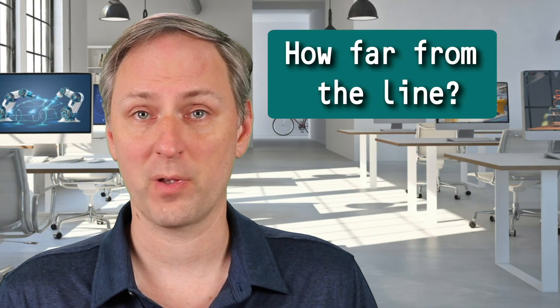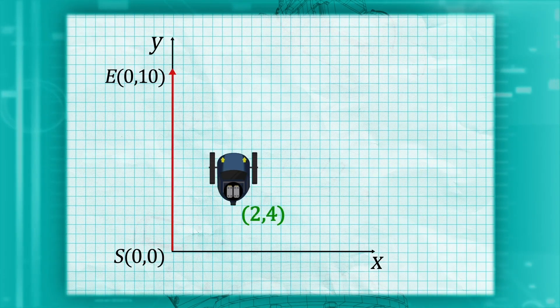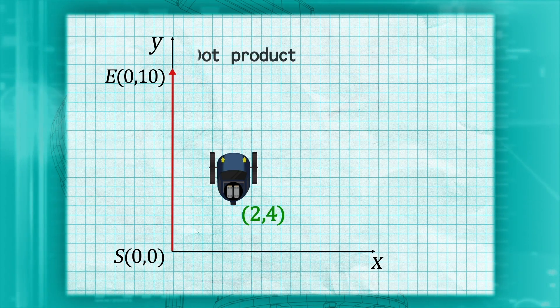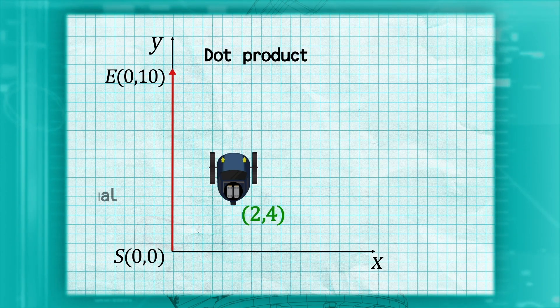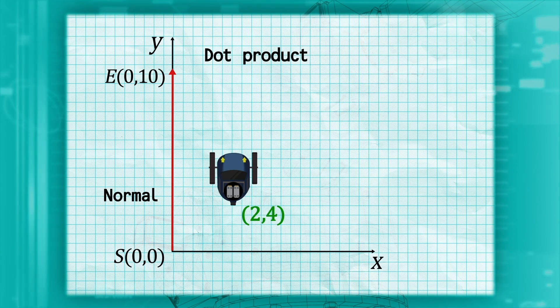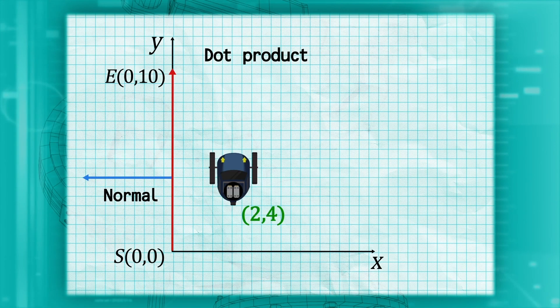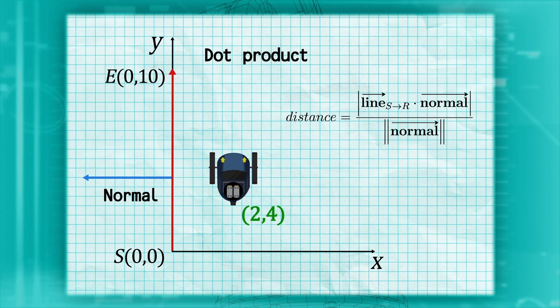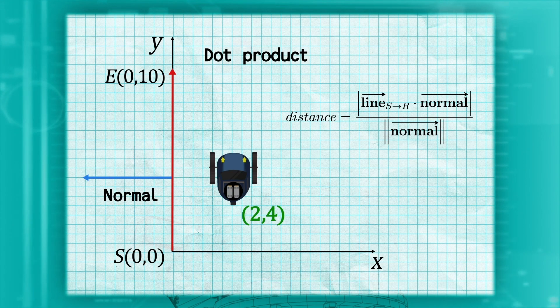Now that we know what side of the trajectory we are on, we still need to know how far from the line we are. We can use the vector form of a line to find this distance. We will use two new concepts to find this distance. First, the dot product allows us to multiply two vectors together to get a single number. The second is the normal to the trajectory. The normal is simply any other line that is perpendicular to our trajectory line. The distance is equal to the absolute value of the dot product between the line from the start point to the robot position and the normal to the trajectory divided by the magnitude of the normal.